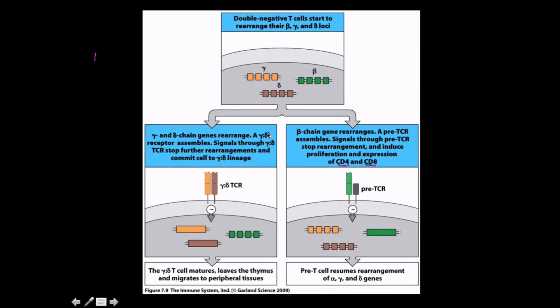Whereas the other one, if the gamma-delta wins, we stop rearrangement of the beta chains and progress and develop into that. What's interesting to me is that these things leave the thymus immediately and migrate to peripheral tissues, whereas with these guys we have some selectivity to undergo for them.